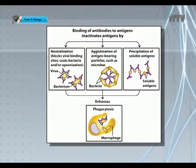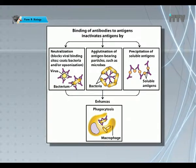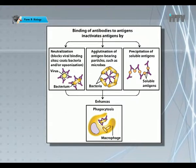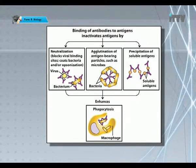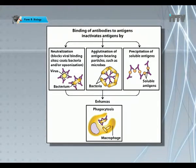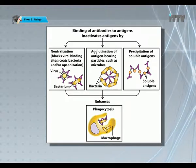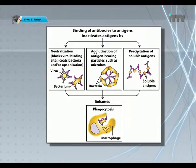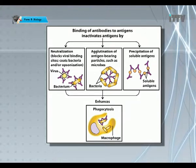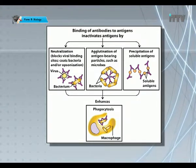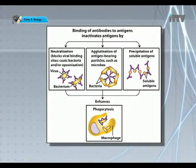The diagram shows mechanisms involved to destroy antigens via antibody-antigen interaction. Let's look at the first mechanism called neutralisation. In neutralisation, the antibody blocks viral attachment sites or coats bacterial toxins, making them ineffective to infect a host cell. The Y-shaped antibodies bind to certain attachment sites, making them ineffective to infect our normal cells.